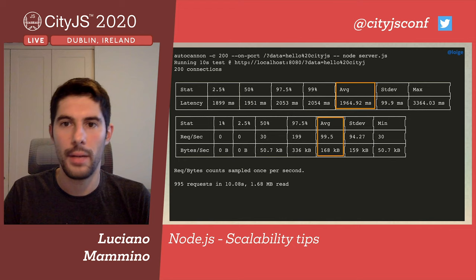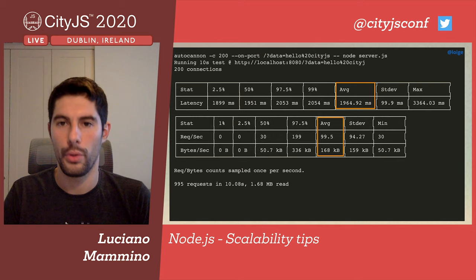If we run this command — specifying the data parameter — it runs 200 requests in parallel for 10 seconds. The average latency is almost two seconds, while the number of requests per second is about 100. These numbers are not great but they don't look bad either. The question is: how do we even know what is good and what is bad? What is our frame of reference?